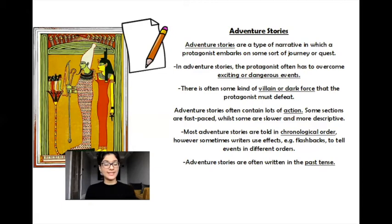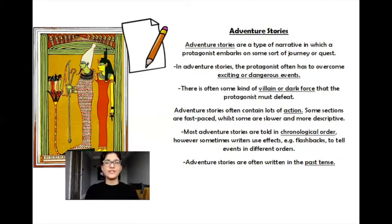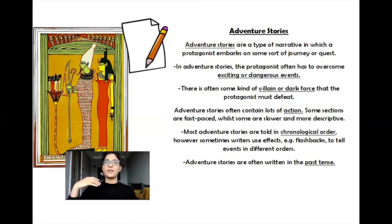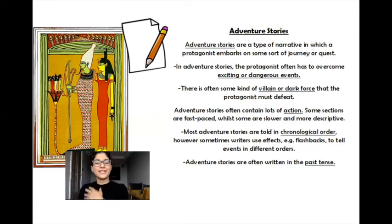Most adventure stories are told in chronological order — the stories are told in the order they happen: beginning, middle, and end. However, sometimes writers can use different effects. One effect is called a flashback, which tells events in a different order. A writer might include a flashback to a memory the main character had from a couple of years ago, making the story feel more unique. Adventure stories are often written in the past tense.